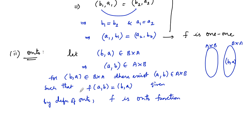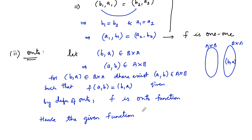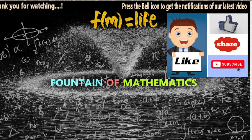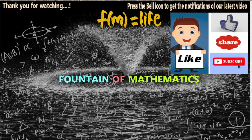Since the function is both one-to-one and onto, hence the given function f is bijective.